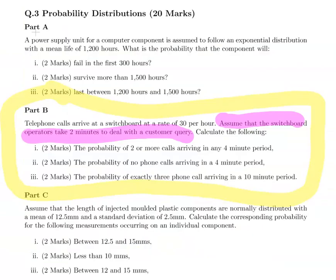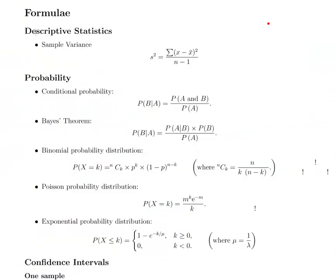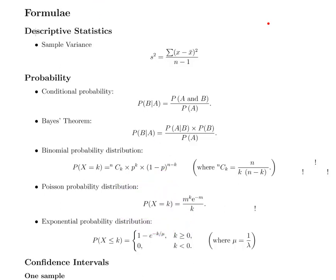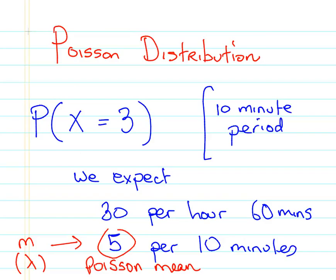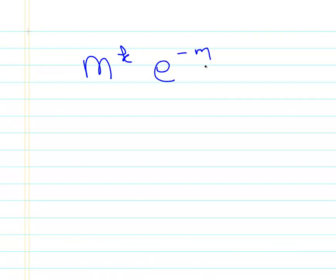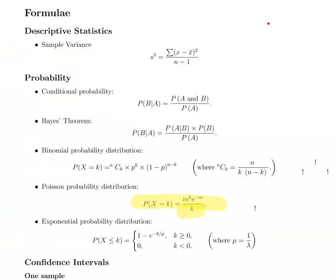Let's go to our tables. The Poisson probability formula is: P(X = k) = m^k × e^(−m) / k! — that's k factorial. There's a small typo in the notes there, but it should be k factorial.